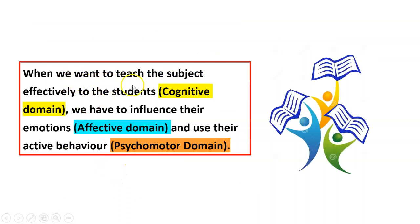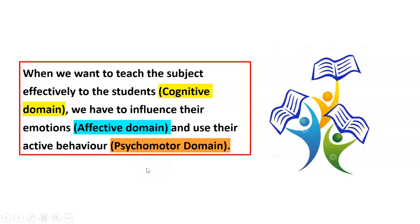When we want to teach the subject effectively, it is related to the cognitive process — teaching them and making them understand the subject is a process happening in the brain, the cognitive domain. We also have to influence their emotions — that is the affective domain. When we make them feel that they know something about the subject, and we appreciate them, it will motivate them to do better and they exhibit active behavior — that is the psychomotor domain. We have to work with all three domains so that students can learn effectively in today's environment.